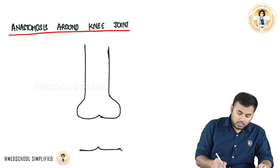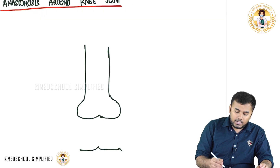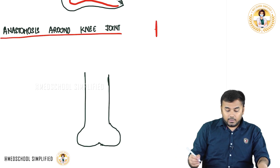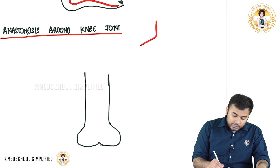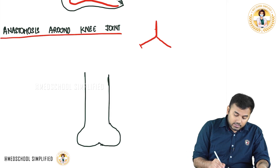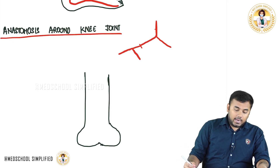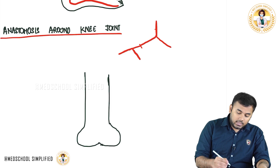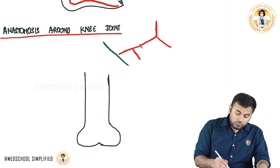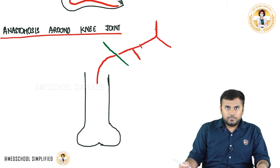We have got a vessel — this is called the abdominal aorta. This abdominal aorta divides into two branches called the two common iliacs. The two common iliacs divide into right iliac and left iliac. This right iliac crosses the inguinal ligament and enters inside to form the femoral artery. This is your femoral artery.